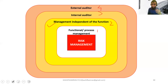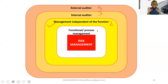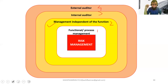The fourth line of defense is the external auditor, providing external assurance that the risk management system in the organization is robust. In frameworks like Sarbanes-Oxley in the US, the external auditor must give assurance on risk management in addition to the financial statement opinion. The external auditor reviews the risk management systems and provides assurance to shareholders, engaged as an extra non-audit service.